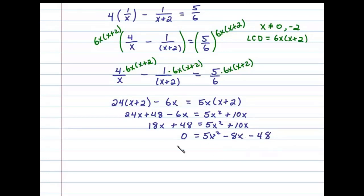This quadratic factors. We'll use 5x and x. 48 factors as 4 times 12. If we place the 4 here and the 12 there, we'll have a 20x and a 12x which adds up to -8x if the 20 is negative and the 12 is positive. Positive 12 times negative 4 is -48, and it's factored correctly.